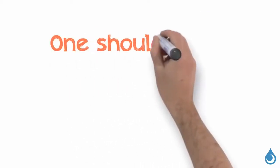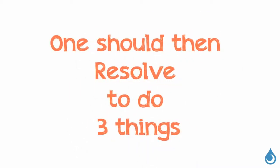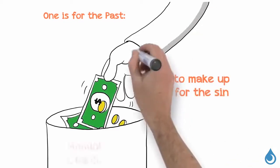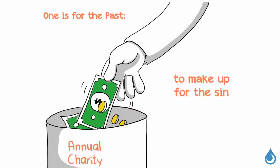After fear and regret, one should then resolve to do three things. One is for the past, to make up for the sin. For example, if you did not pay your annual charity, you should do so now.